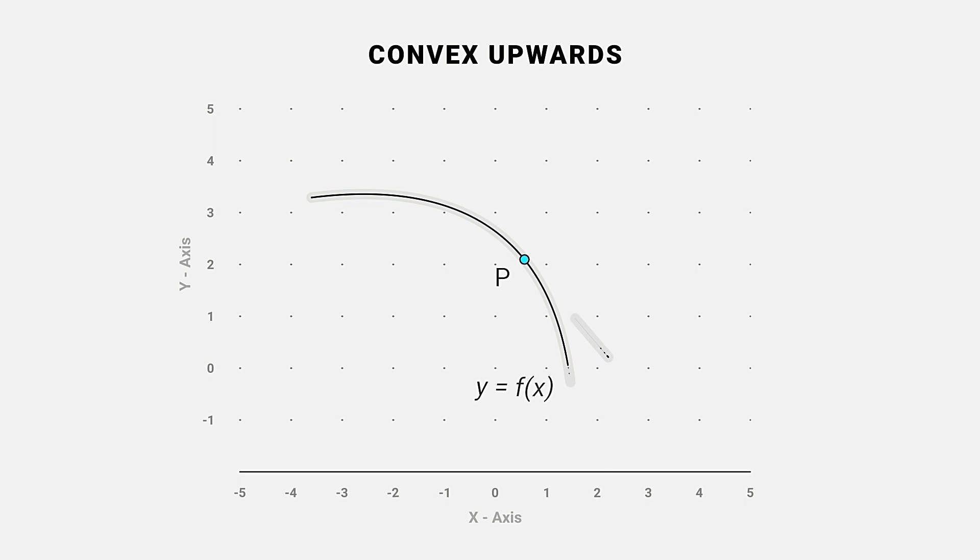And if the curve is below the tangent at p, it is said to be convex upward or concave downward. Mathematically, slope decreases as x decreases. So, second derivative of y is less than 0.